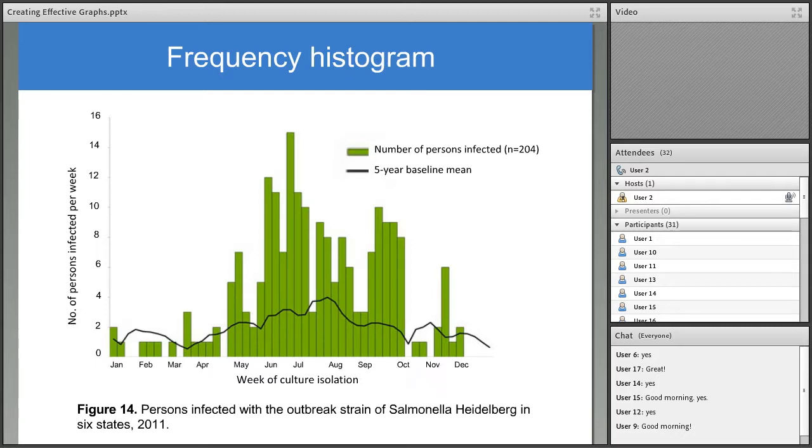One last type of graph that we commonly see in the manuscripts we edit is the frequency histogram. These are useful to show the distribution of individuals in a population. This is a frequency histogram for an outbreak of the Salmonella-Heidelberg strain. On the x-axis are the months of 2011, divided further so that one column is shown for each week. On the y-axis, we can see the count or number of people who had positive cultures each week. Overlaid on this frequency histogram for comparison is a black reference line representing the mean number of cases per week of the year over the past five years. The key clarifies this. Note that in a frequency histogram, there should be no space between the bars unless there are no data to report for a category.